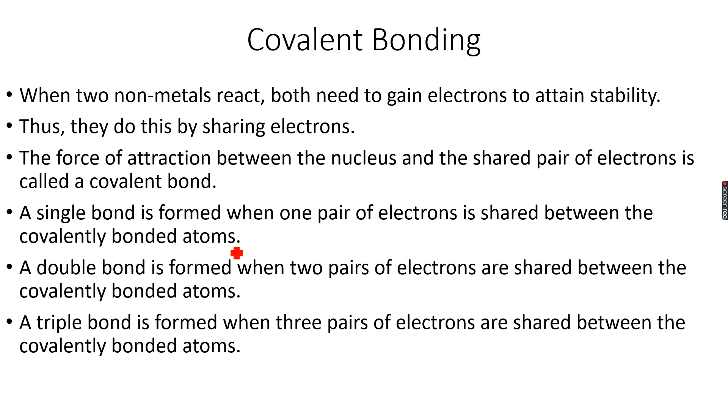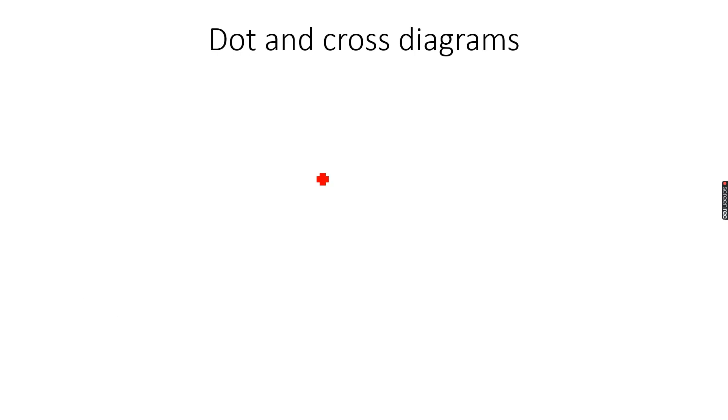When they're sharing electrons, these shared electrons are between both the atoms. The shared electrons are between both the atoms because when we do the dot and cross diagrams, let's take a look.